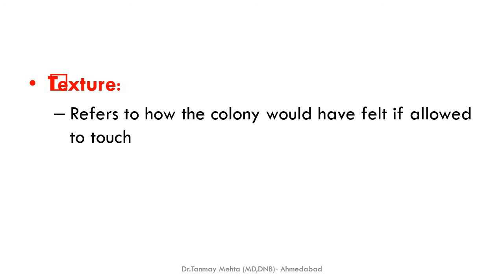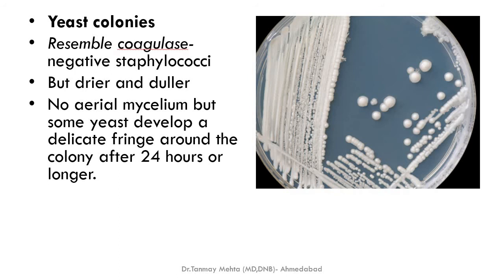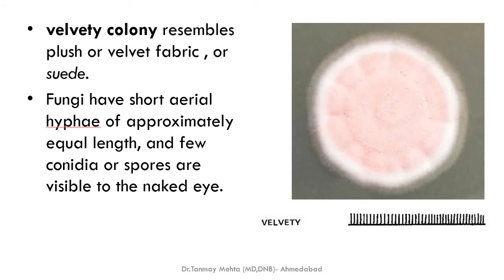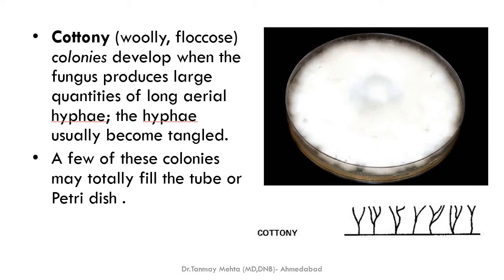Texture refers to how the colony would feel if touched. Yeast-like colonies resemble staphylococcal colonies but are drier and dull with no aerial mycelium; some develop a delicate fringe after 24 hours. Glabrous colonies appear leathery or waxy with little aerial mycelium and seem to merge with the agar. Velvety colonies resemble plush velvet fabric with short aerial hyphae of approximately equal length and few visible conidia. Cottony or woolly colonies — called floccose — develop when fungi produce large quantities of long tangled aerial hyphae and may lift the lid of a Petri dish, hence called 'lid lifters.'